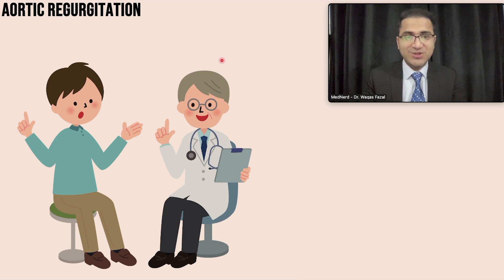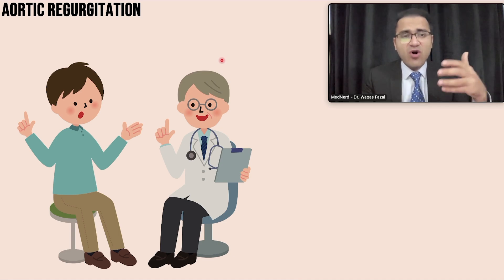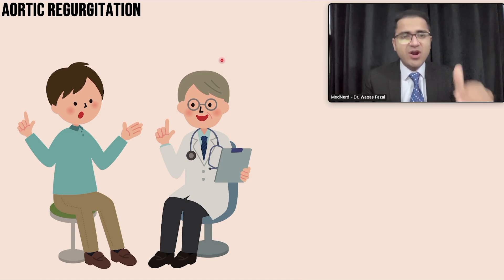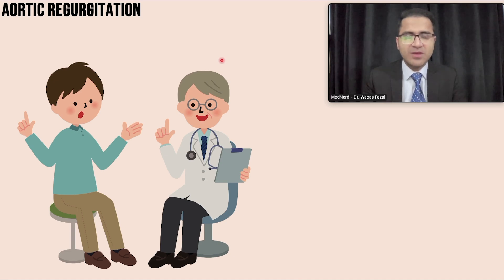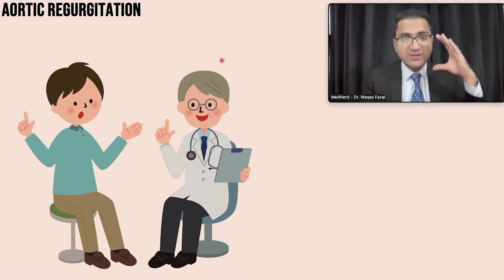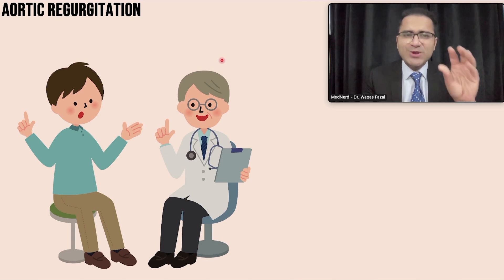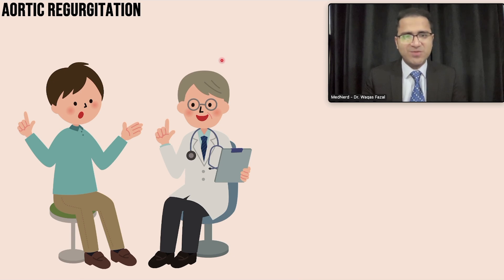First of all, we have a case: a 73-year-old man comes to your clinic and tells you, 'Doctor, I have been experiencing shortness of breath for the last few months. On exertion, when I walk, I feel short of breath. I also get this pounding sensation in my chest with each and every heartbeat — my heartbeat has become more prominent and I feel it. I also get recurrent headaches.' His wife tells you that sometimes she notices his head is moving with each and every heartbeat. When you auscultate the patient's chest, you listen to a decrescendo diastolic murmur. This patient is having aortic regurgitation.